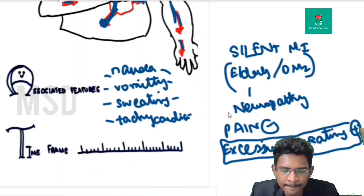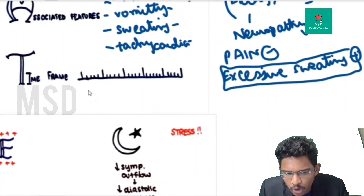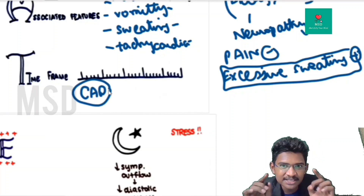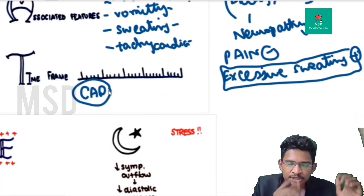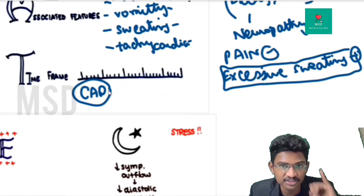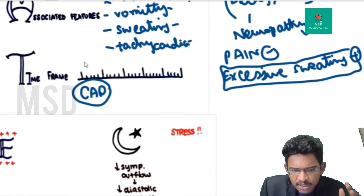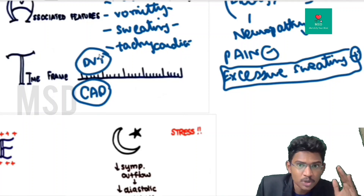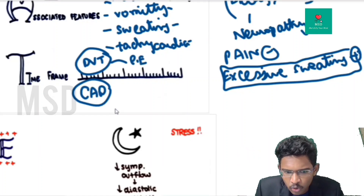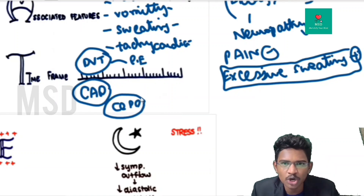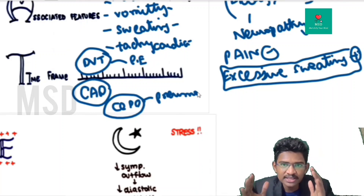For time frame, if the patient has a history of old coronary artery disease, ask them to compare the nature of the current pain to prior episodes. If the patient has leg swelling or DVT, suspect pulmonary embolism. If the patient has a history of COPD or bullous lung disorders with sudden onset chest pain, suspect pneumothorax. Time frame gives a good idea of what's going on.